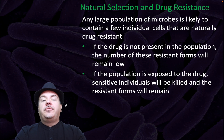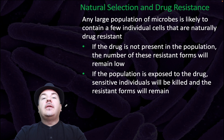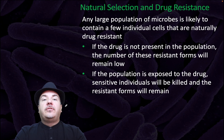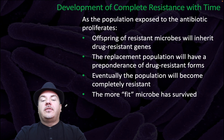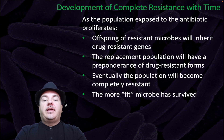Any large population of microbes is likely to contain a few individual cells that are naturally drug resistant. If the drug is not present in the population, the number of these resistant forms will remain low. If the population is exposed to the drug, sensitive individuals will be killed and the resistant forms will remain. As the population exposed to the antibiotic proliferates, offspring of the resistant microbes will inherit drug resistant genes. The replacement population will have a preponderance of drug resistant forms, and eventually the population will become completely resistant. In other words, a more fit microbe has survived in the environment of the antibiotic.